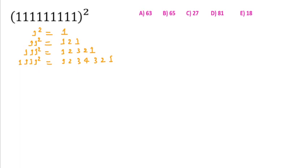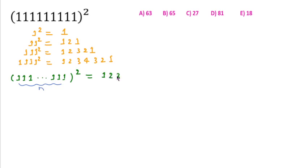So if we have to find for n-digit 1s squared, we can write it as: 1, 2, 3, … up to n, then decreasing n−1, n−2, … 3, 2, 1.